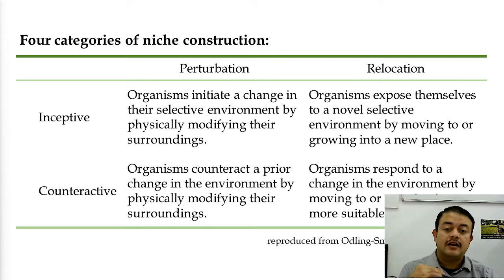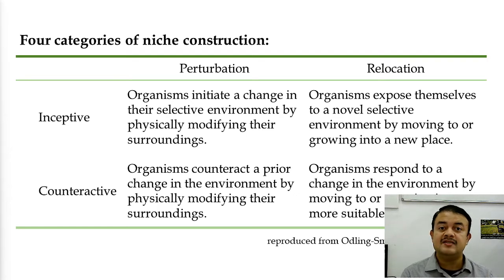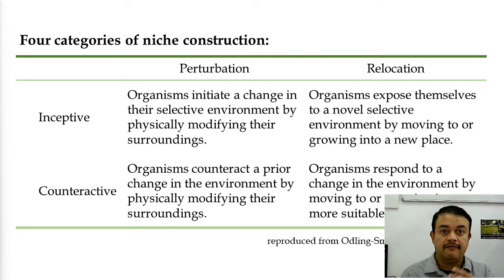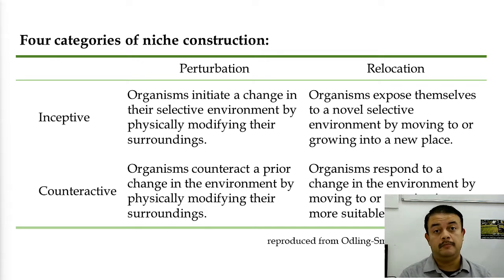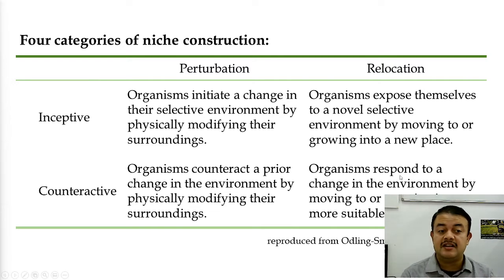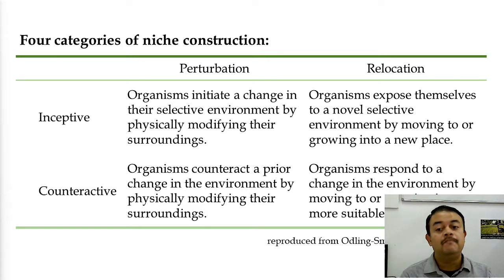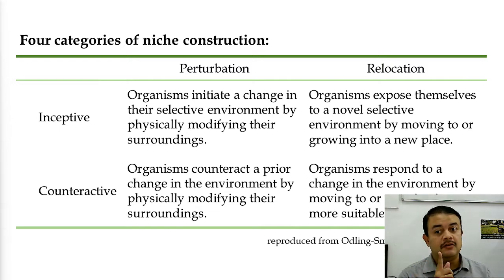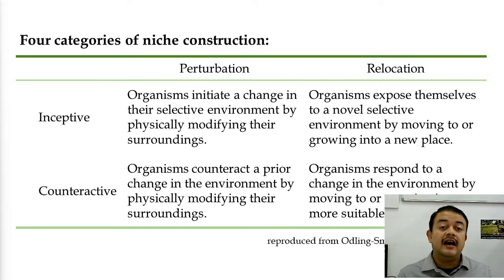Counteractive types are responses to something else. Counteractive perturbation means organisms counteract a prior change in the environment by physically modifying their surroundings — for example, grass living in mine waste areas changing its phenology, meaning its flowering times. Counteractive relocation means organisms respond to environmental change by moving to a more suitable place, essentially immigrating to a better environment. In inceptive types, organisms are the initiators of change.